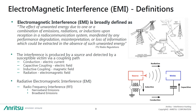Then you have capacitive coupling, which is caused by an electric field produced by its source and affecting the victim. And then you have inductive coupling, which is similar to capacitive, only caused by a magnetic field instead. One of the most common examples of capacitive and inductive coupling is crosstalk between cables, wires, or traces on a printed circuit board.